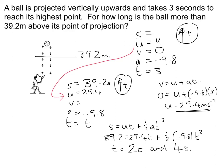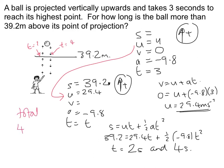So the ball is thrown up, reaches 39.2 metres at 2 seconds on the way up, continues to the top, comes back down, and is at 39.2 metres again at 4 seconds. The question asks for how long the ball is above 39.2 metres, which is from time 2 to time 4 — a total of 2 seconds.